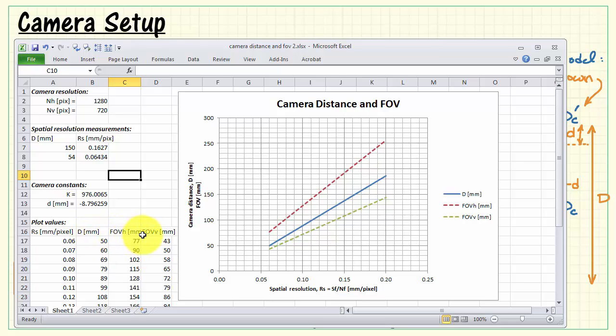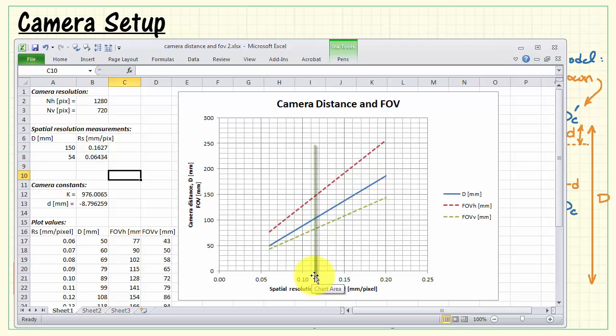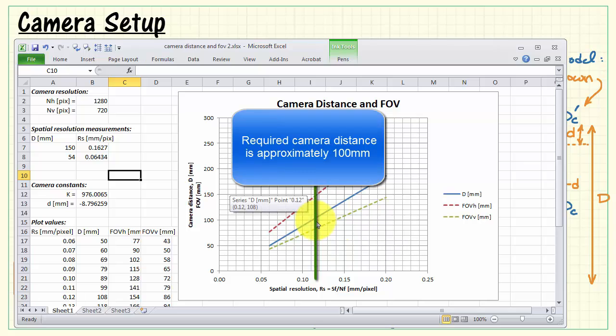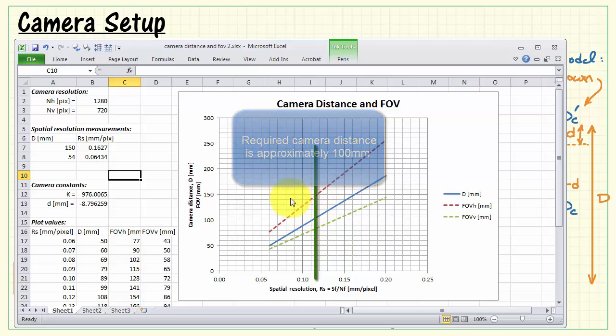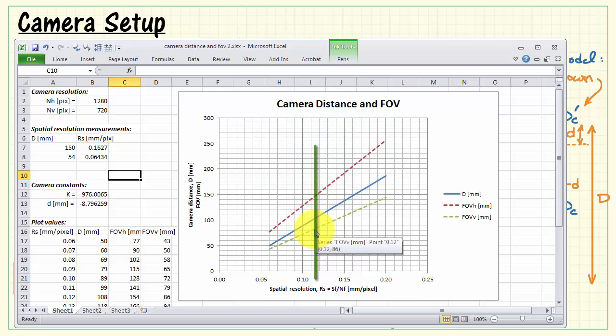Here I'm using the equations that I developed earlier to calculate the camera distance and field of view values. Just a reminder, the coin's application requires 0.114 millimeters per pixel for spatial resolution. And let's project that line up, and that intersection point then tells us the field of view limits as well as the required camera distance. For example, we see that the required camera distance is approximately 100 millimeters, and the field of view is approximately 150 millimeters by 85 millimeters.